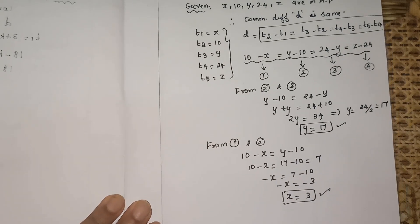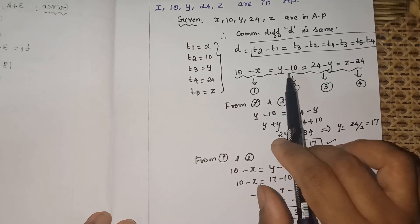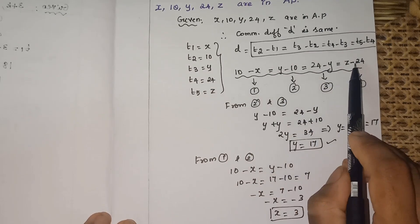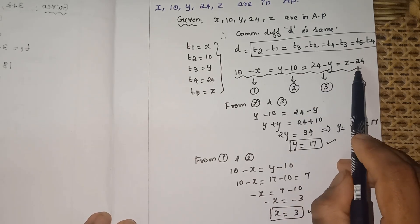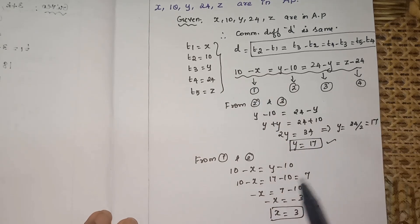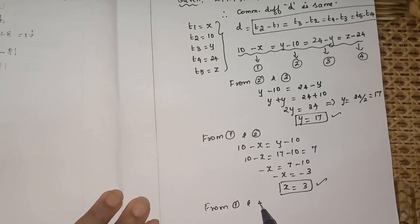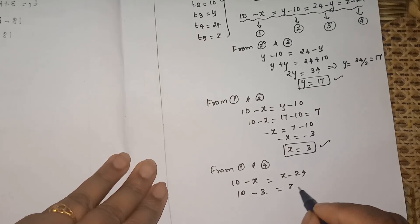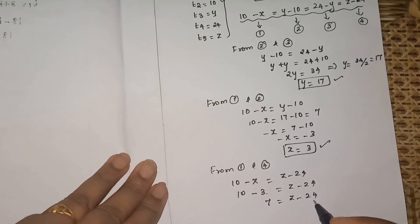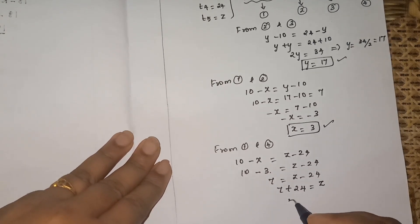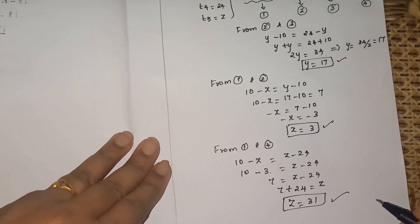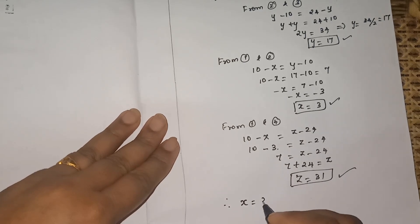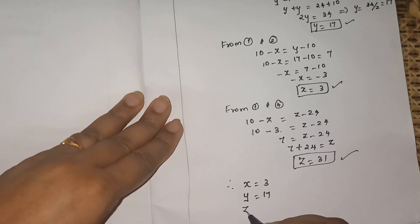Now only z is pending. We know both x and y. Taking equations (1) and (4): 10 minus x equals z minus 24. Substituting x equals 3: 10 minus 3 equals 7, so 7 equals z minus 24, which gives z equals 7 plus 24 equals 31. Therefore, x equals 3, y equals 17, and z equals 31.